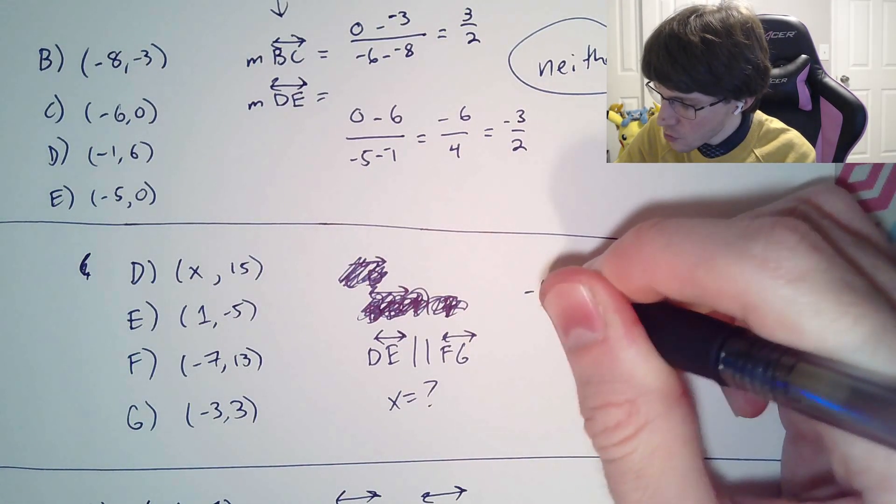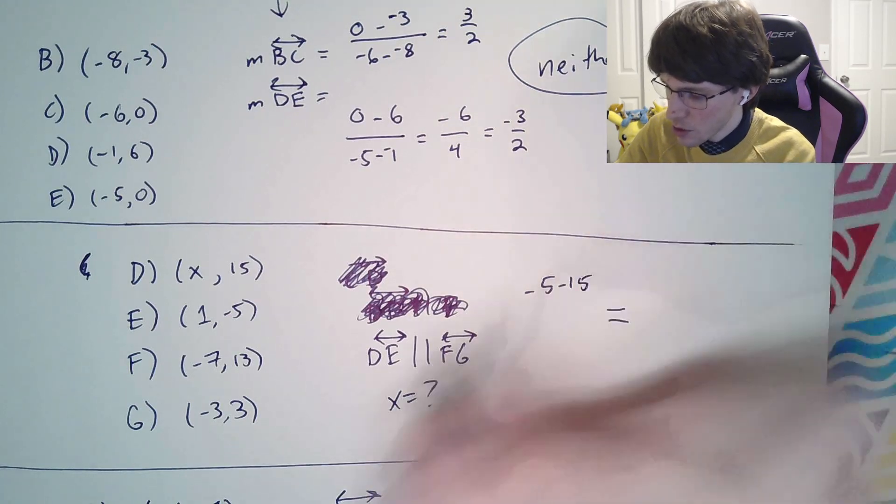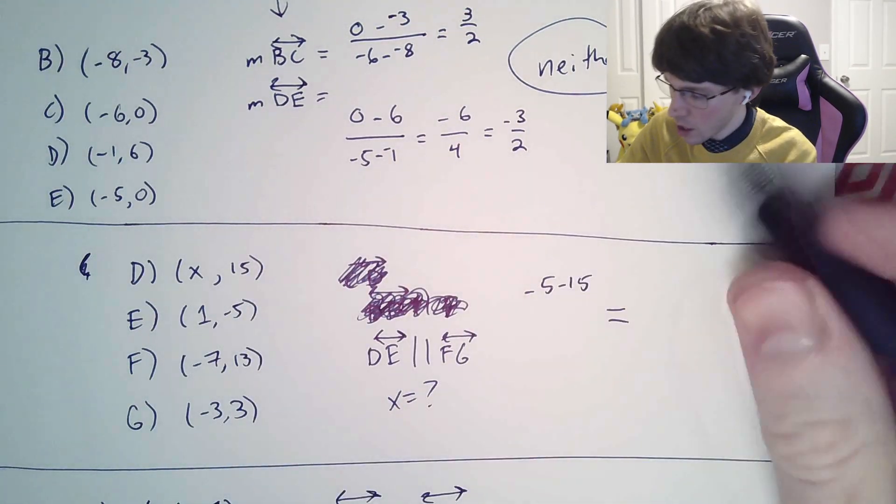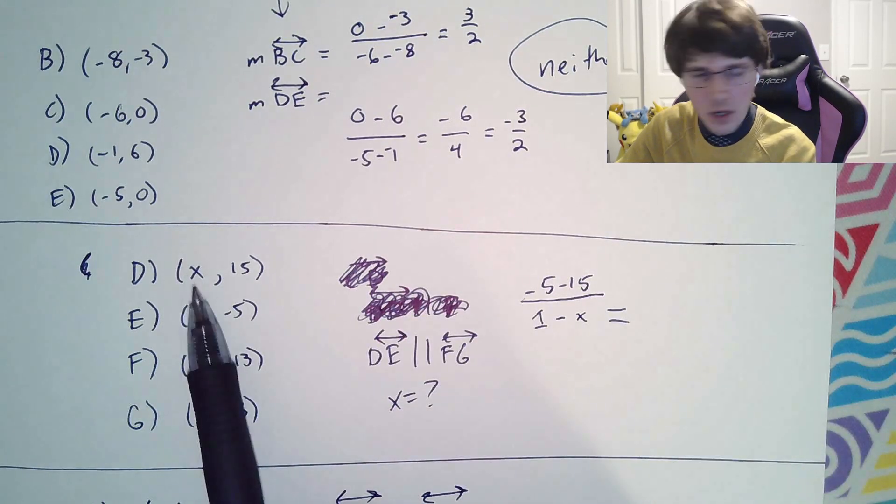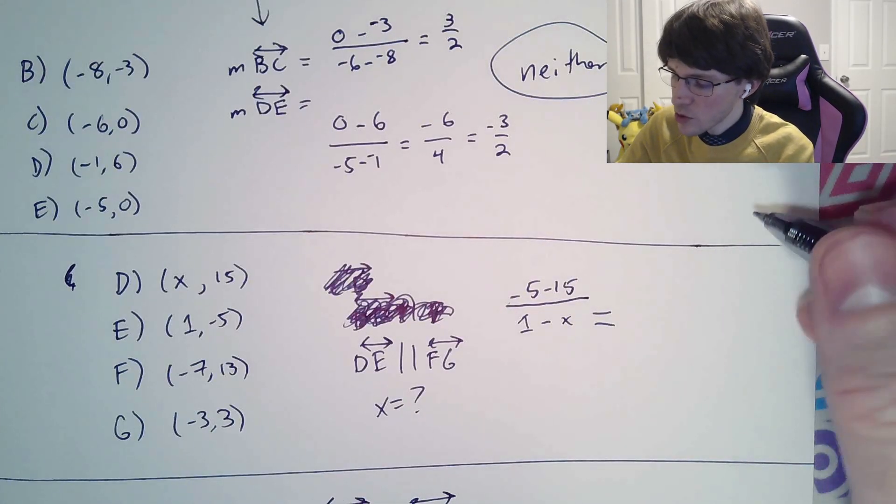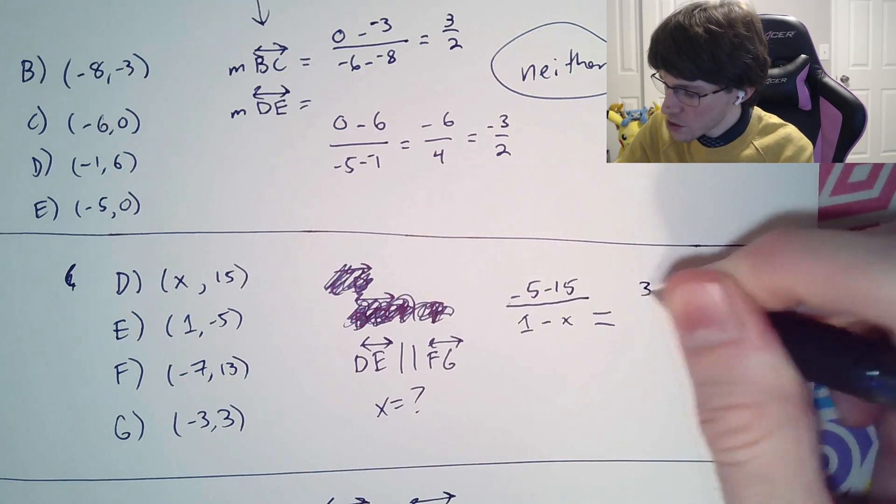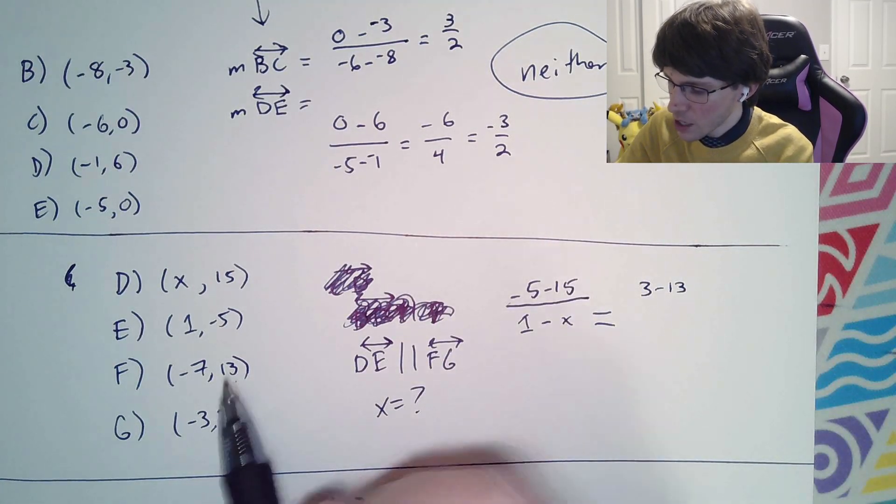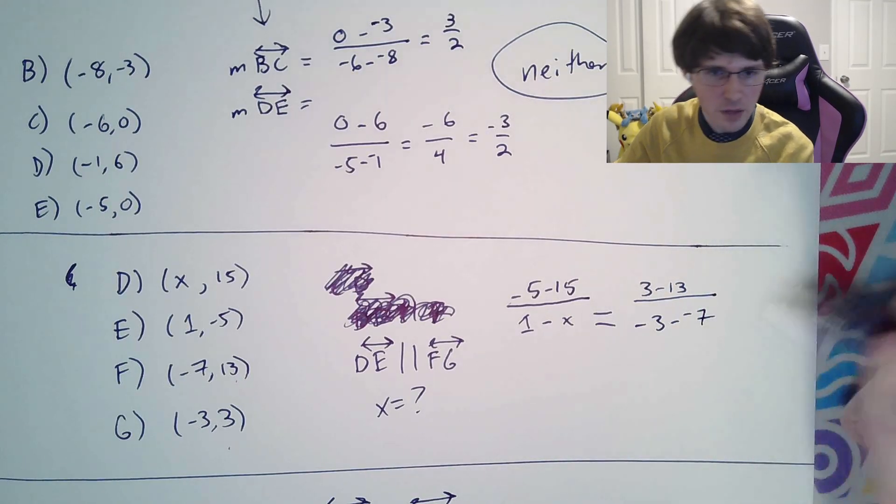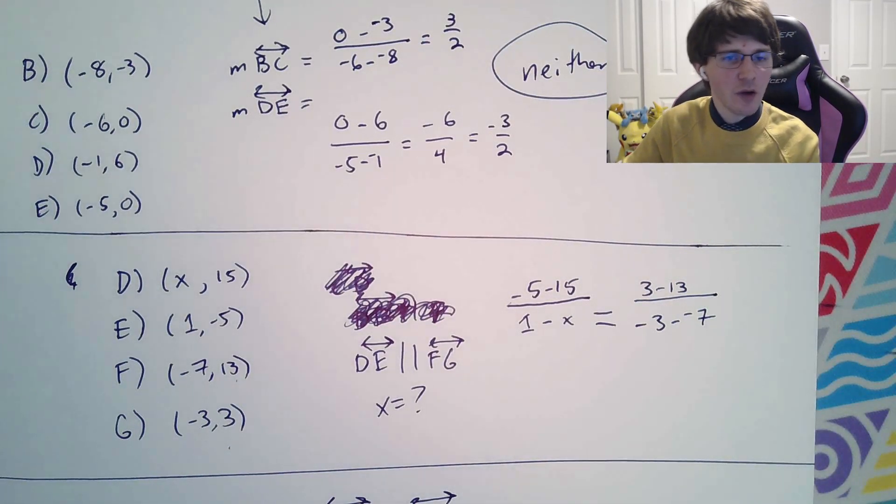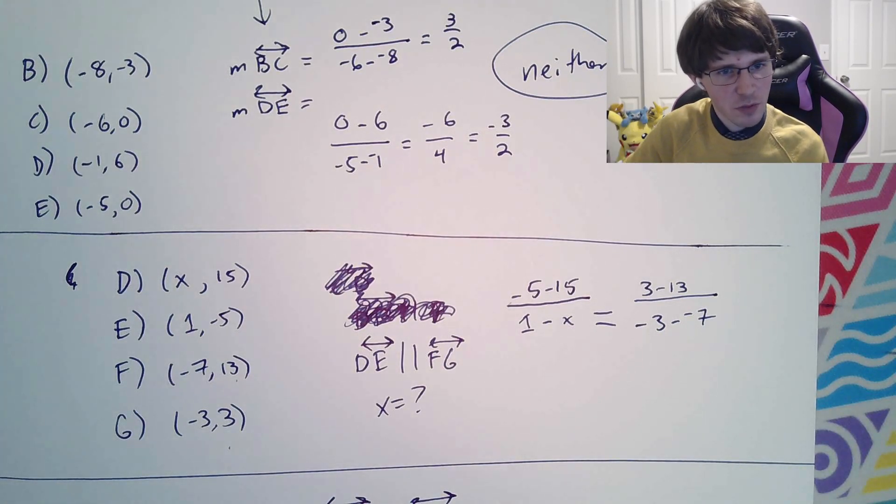So what you're going to do is, anytime you have exactly parallel slopes, what that means is that their slope formulas have to be identical. So we're going to go ahead and do that. We're going to say we have y2 minus y1 divided by x2 minus x1. That is going to be equal to y2 minus y1 over x2 minus x1.